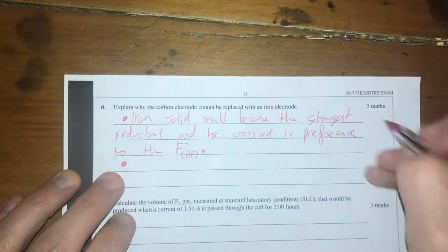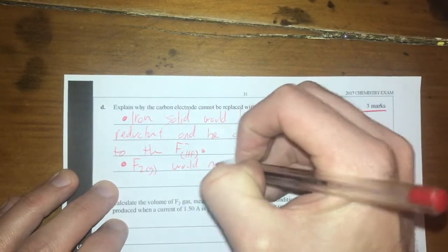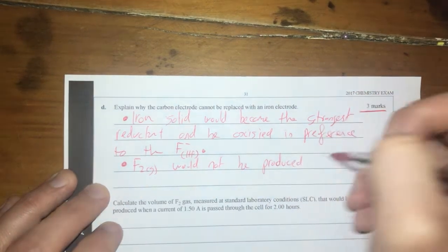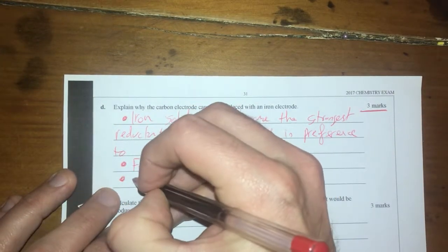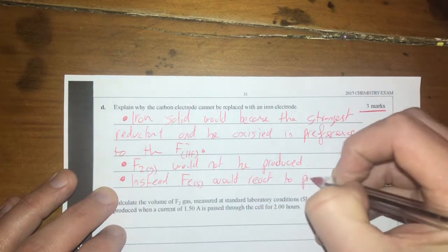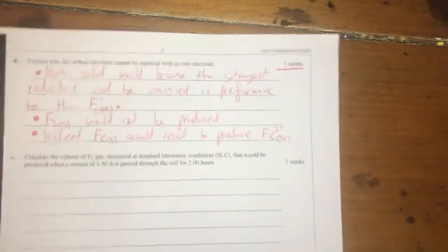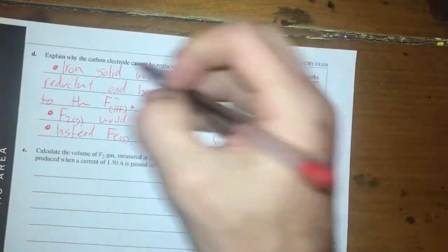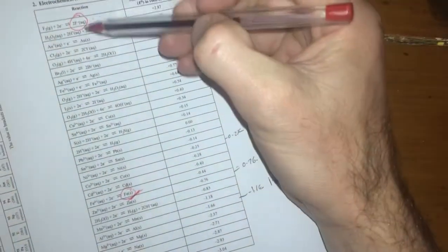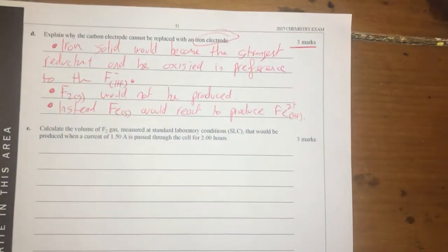Okay so that's one aspect there. That means that the, so three marks dot points coming up here, that means that the F2 gas would not be produced, and I would say that instead the Fe solid would react to produce Fe2+, and that's going to be dissolved in my HF as well probably. So the idea here that we're just simply saying all right if I replace my carbon with my iron I go to my electrochemical series, work out what's going to change in my reaction, and I clearly state what is no longer produced and what is produced and that should give me my three marks again three dot points giving me three marks for that question.